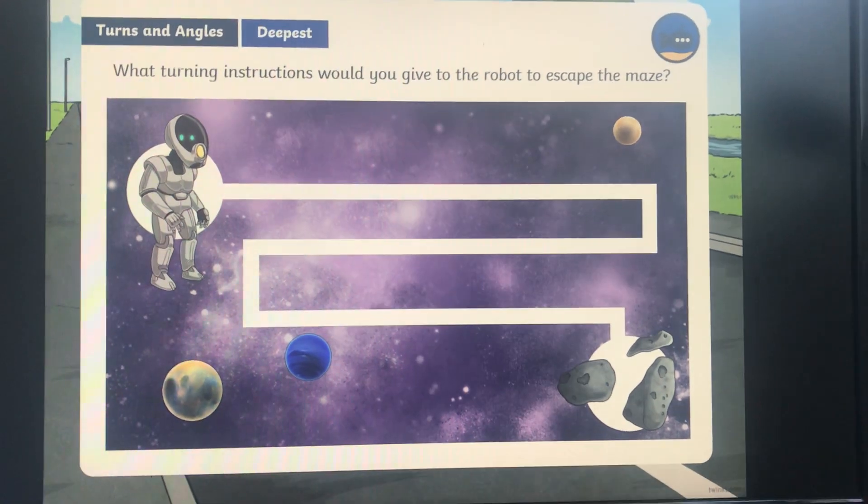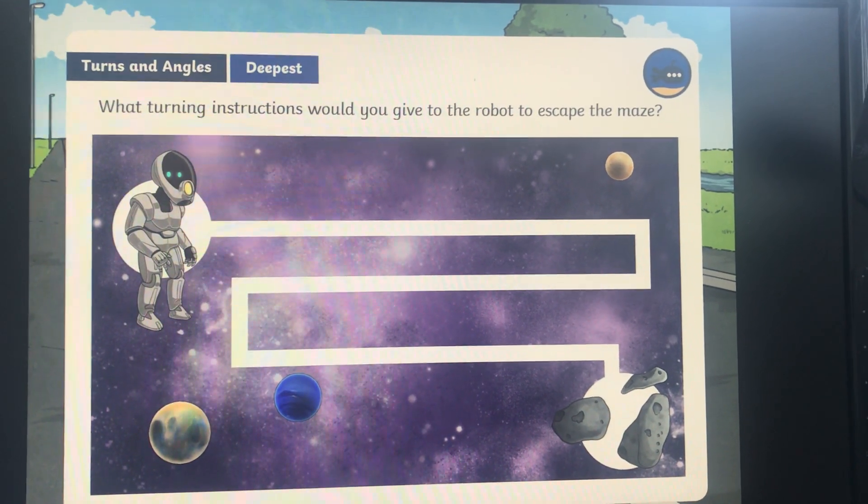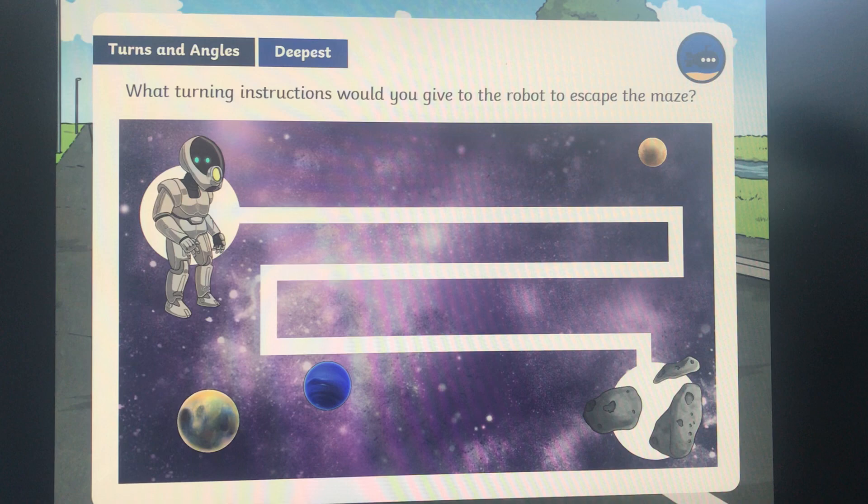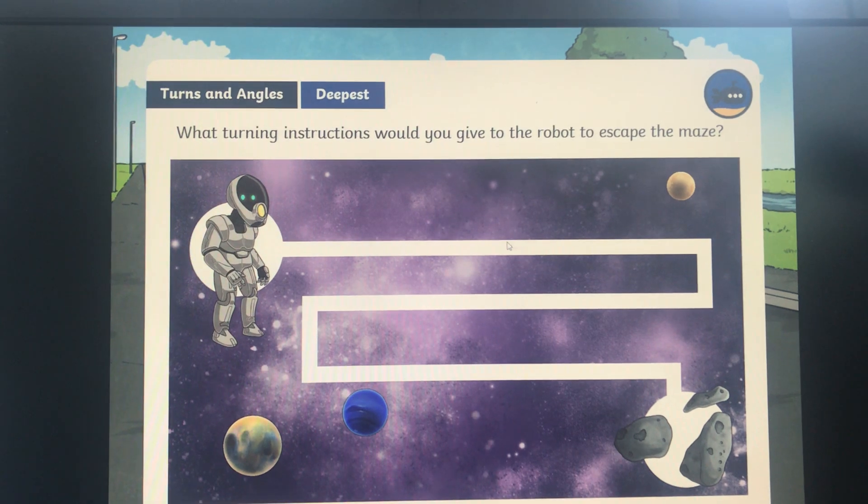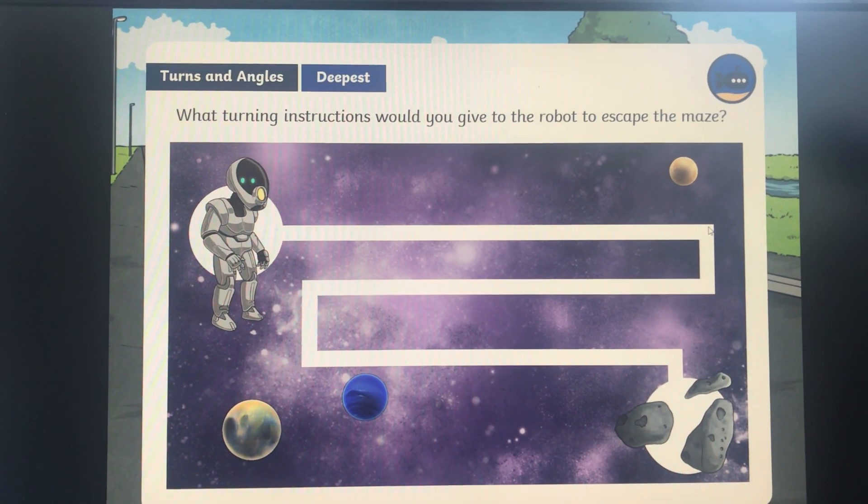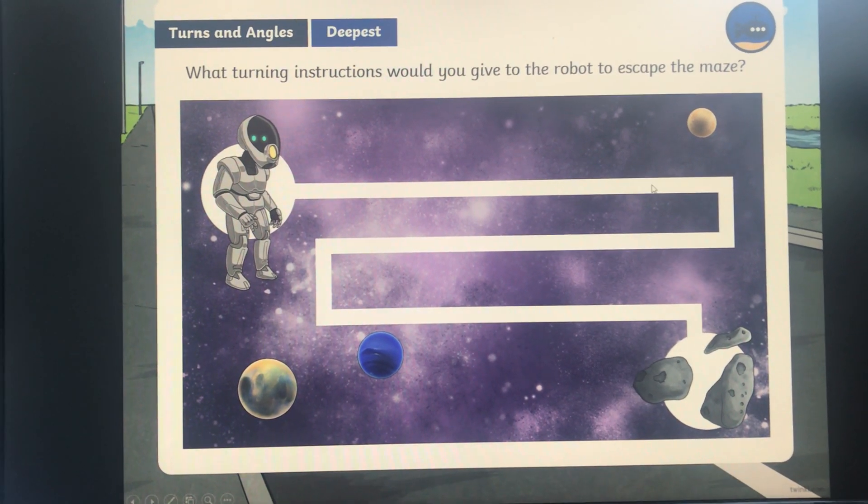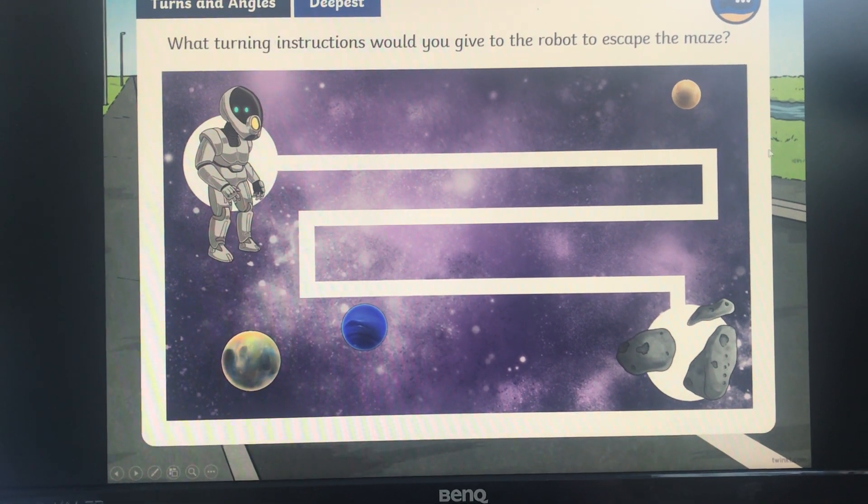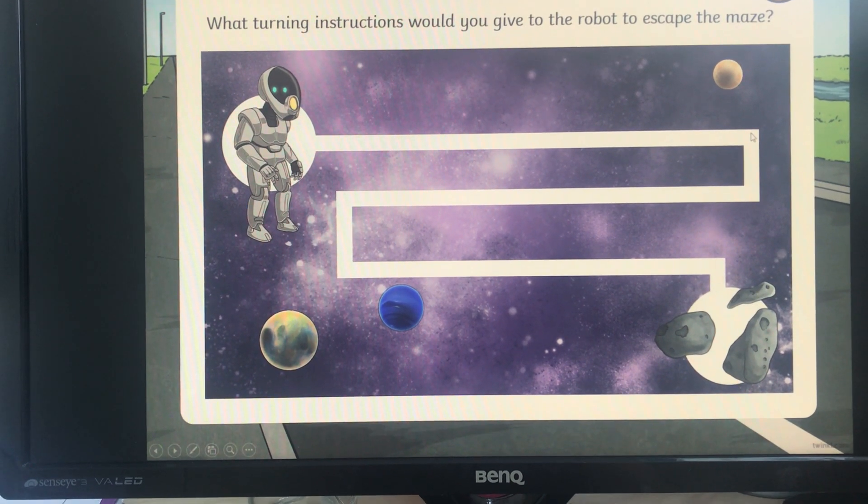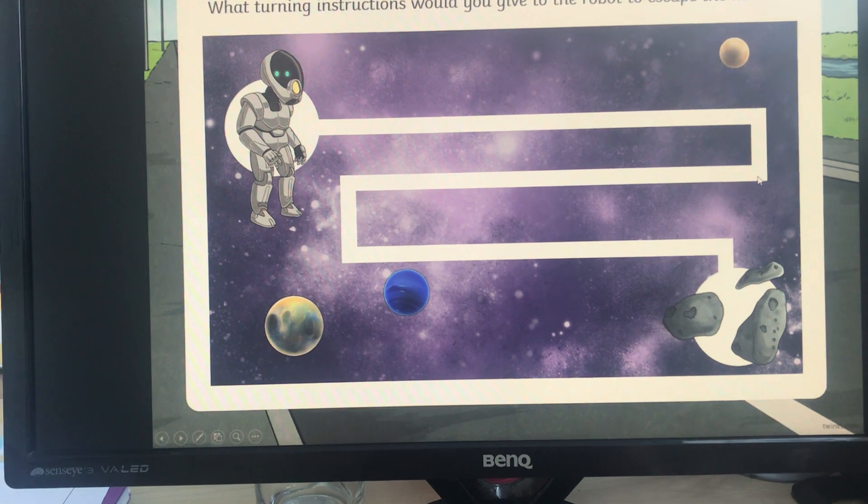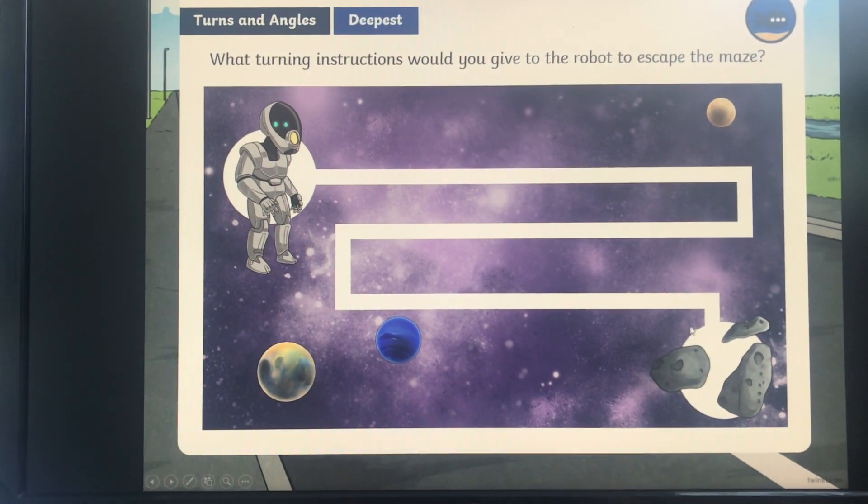This is another game you can play. It says, what turning instructions would you give the robot to escape the maze? So, imagine this robot is walking along here. How would you instruct him to turn so he could now walk down this small bit of the path here? He would need to make a quarter turn clockwise in order to be facing the right direction to walk down this path. And then see if you can direct him all the way to escape the maze.